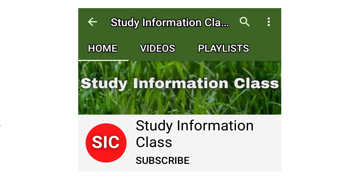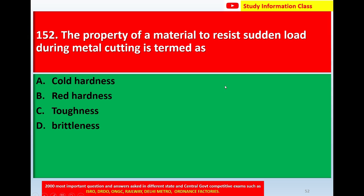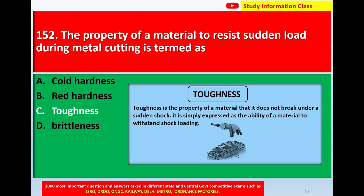Question number 152: The property of a material to resist a sudden load during metal cutting is termed as — option A: cold hardness; option B: red hardness; option C: toughness; option D: brittleness. The correct answer is option C: toughness. Toughness is the property of a material such that it does not break under a sudden shock; it is expressed as the ability of a material to withstand shock loading.